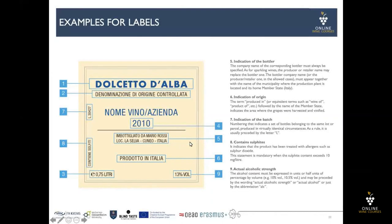Then the indication of provenance. The term 'produced in,' or equivalent terms such as 'wine of' or 'product of,' followed by the name of the member state, indicates the area where the grape harvest is vinified.